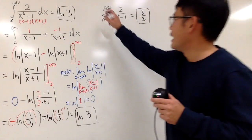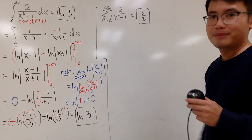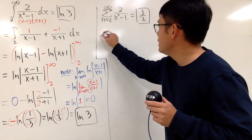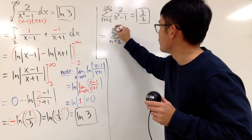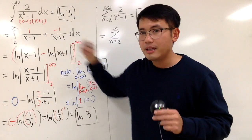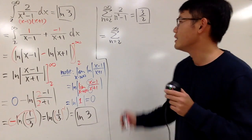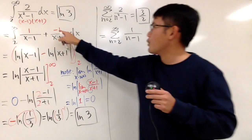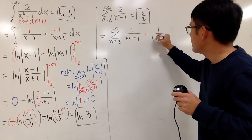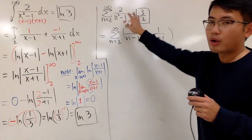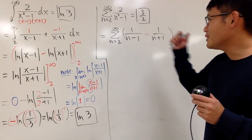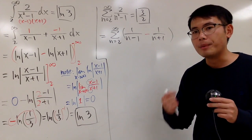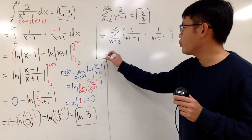Now let's see how we can handle the series. We're going to be doing partial fractions as well. This right here is the summation going from 2 to infinity, and it's pretty much just the same expression with n instead of x. Using partial fractions — same thing as before — you get 1/(n-1) minus 1/(n+1). But this time you are not going to integrate. This is an example of a telescoping series.